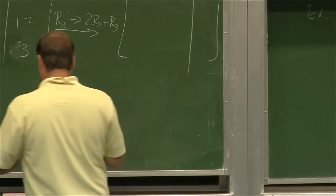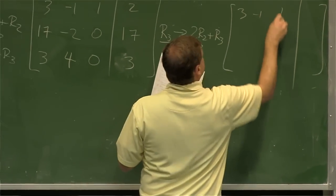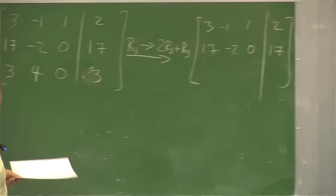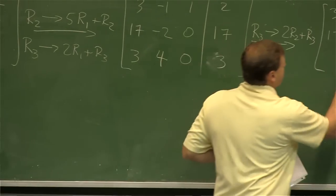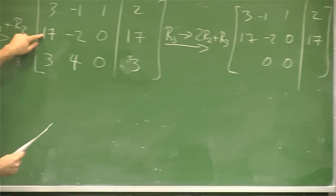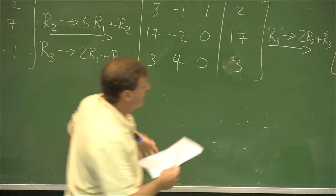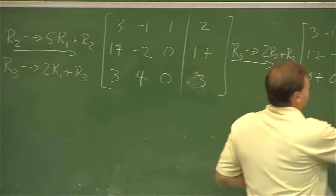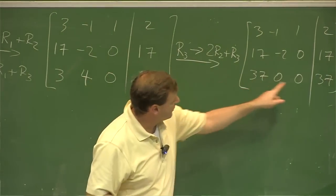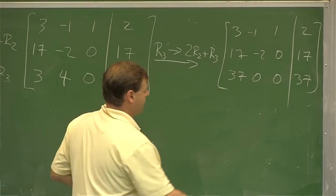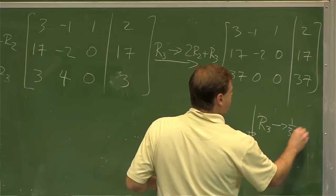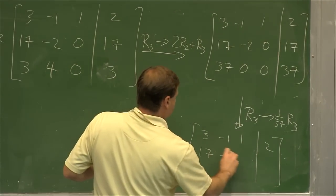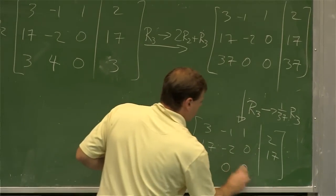The first and second rows don't change. Row 3: multiply row 2 by 2 and add — I get 0, 0; 2 times 17 is 34 plus 3 gives 37; 2 times 17 is 34 plus 3 gives 37. So conveniently I get 0, 0, 37, 37. Now I'll replace row 3 by one-thirty-seventh of row 3, giving 0, 0, 1, 1.